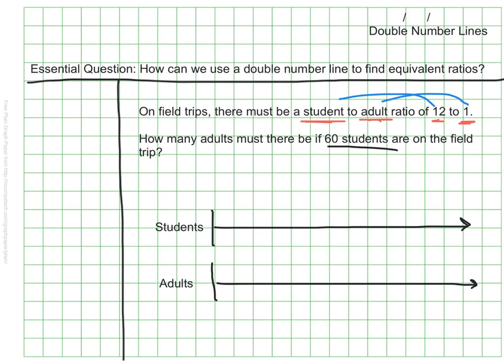Remember our initial ratio was 12 to 1, and the 12 represented students. So I'm going to go ahead and put 12 as my starting point for the number of students, and 1 as my starting point for the number of adults.